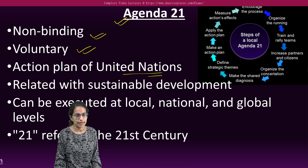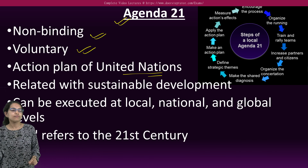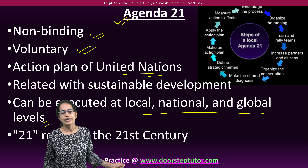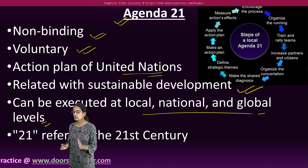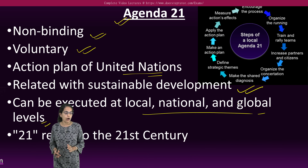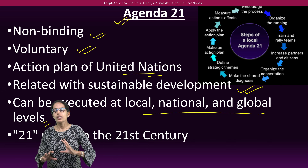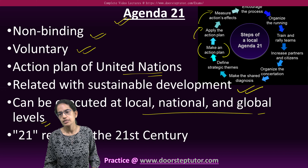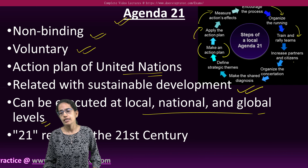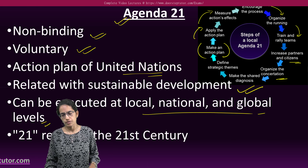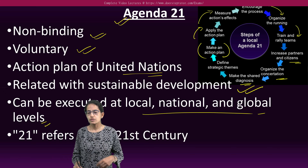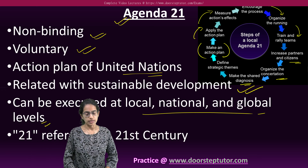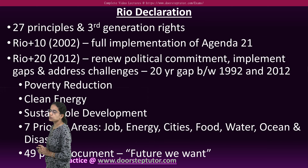Under Agenda 21 — very important — it was voluntary. It is an action plan of the United Nations and it is non-binding. As the name suggests, '21' refers to the 21st century, and it can be executed at the local, national, and global levels. Its main focus is sustainable development. The steps include: creating an action plan, applying it, measuring its effects, encouraging the process, organizing the running, training teams, increasing partnerships, organizing members, and having a common diagnosis with strategic themes.